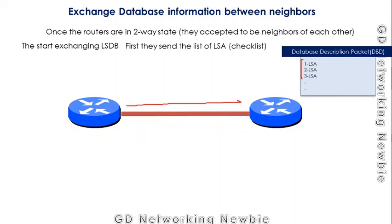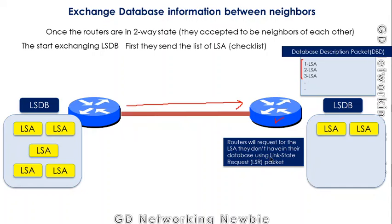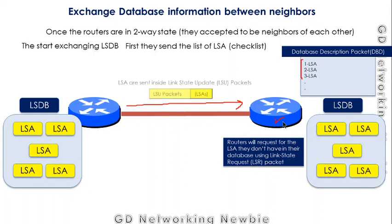The router checks which LSAs from the received list it already has and which ones are missing. It then sends a request back asking for the missing LSAs using a Link State Request packet. The requested LSAs are not sent directly on their own — they travel within a special packet called the Link State Update, or LSU. LSAs themselves are not packets; they are carried inside LSU packets.